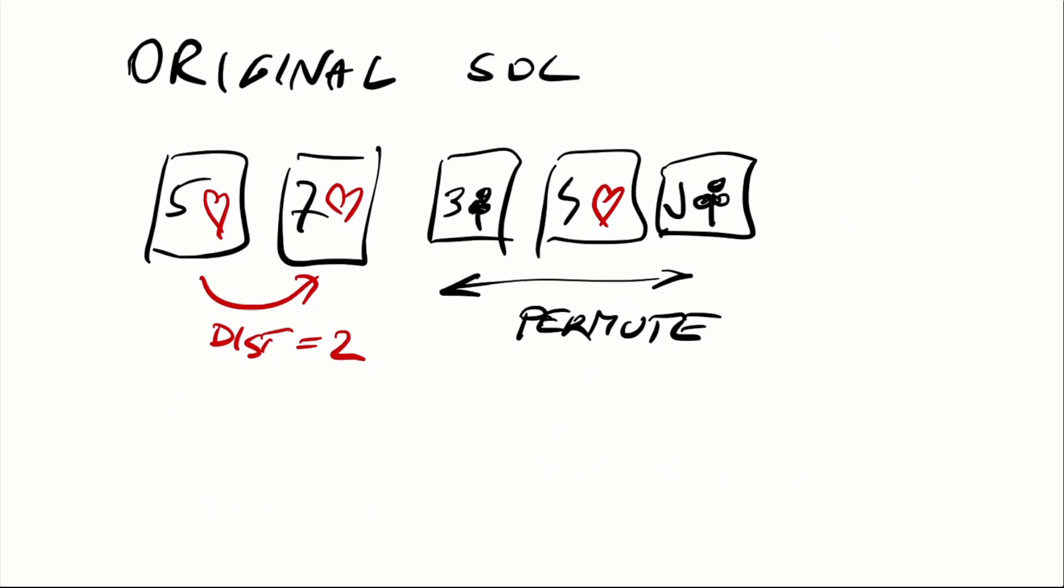So now what we can do is the assistant will reveal the smaller one as the first card, and now what we need to do is encode the distance. We can encode the distance by choosing the permutation of the other three cards. So the lexicographically smallest permutation is distance one, the second is distance two, and so on up to six. In this way we can encode any card from a deck of 52.